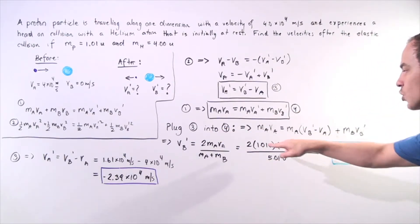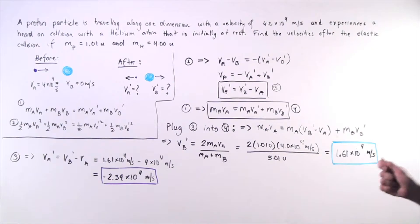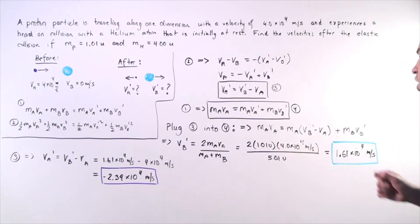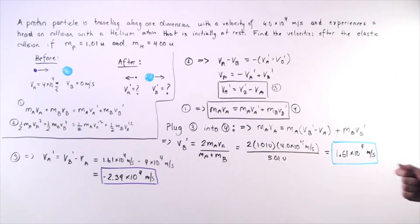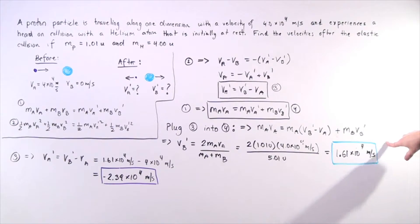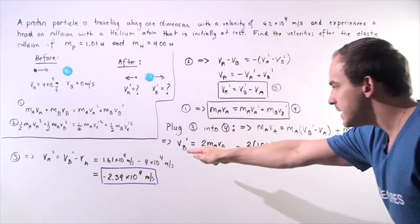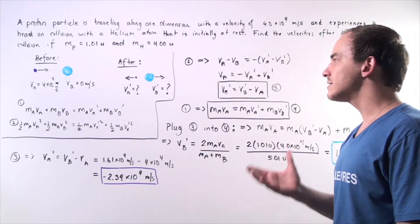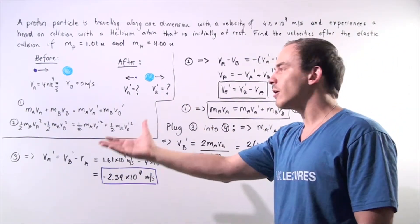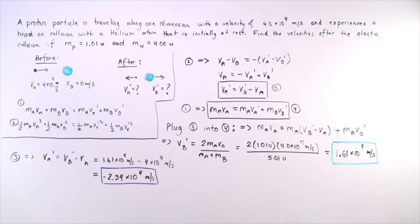Plugging in our values: 2 times 1.01 unified atomic mass units times 4.0 times 10 to the 4 meters per second, divided by 5.01 unified atomic mass units. The mass units cancel, giving us a result. The magnitude of the velocity of the helium atom after our collision is 1.61 times 10 to the 4 meters per second.